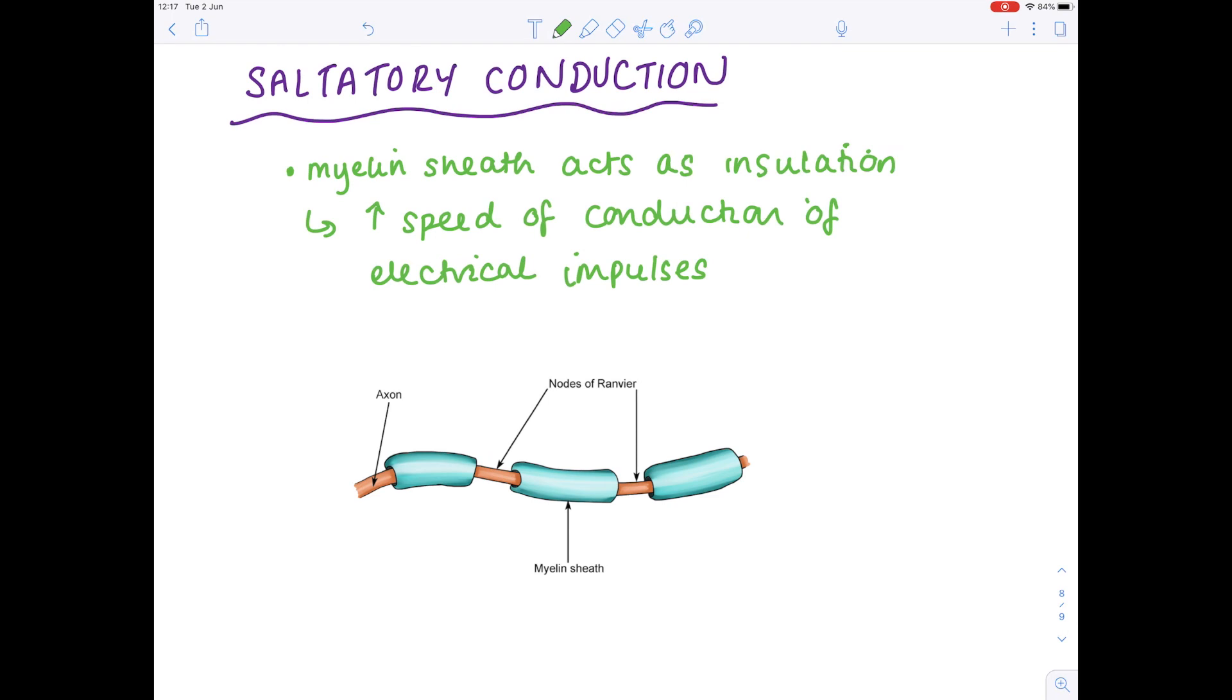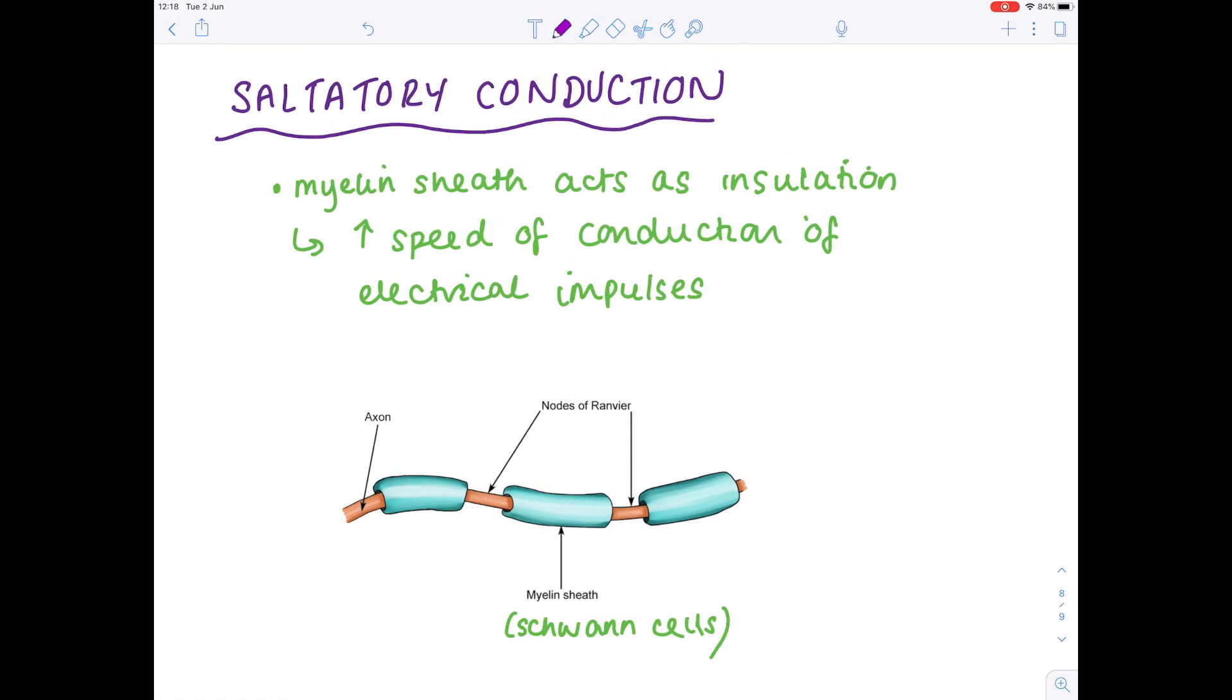If we look more closely at what's going on, we have our myelin sheath, which is actually found on cells known as Schwann cells. Between the Schwann cells, we have our nodes of Ranvier, and notice that the electrical impulse jumps from node to node.